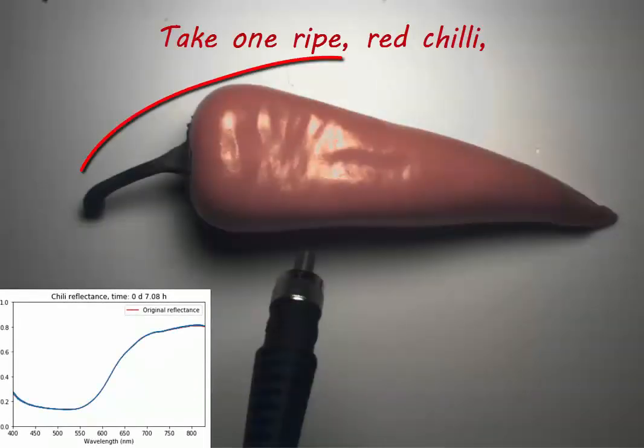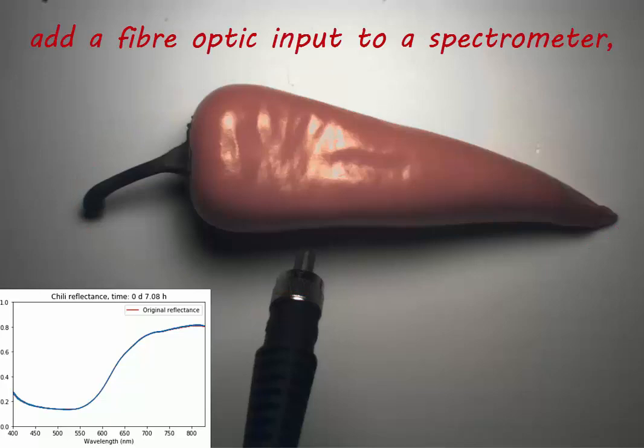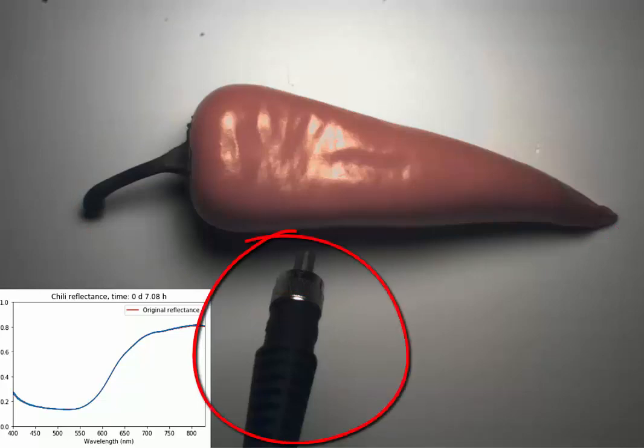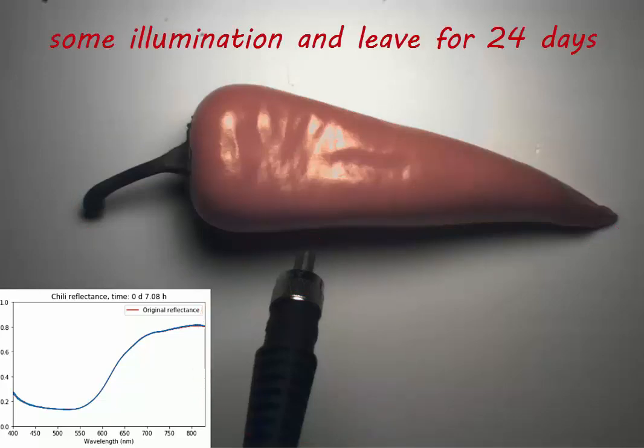First, take one ripe red chilli and a fibre-optic input to a spectrometer. Add some illumination and leave for 24 days.